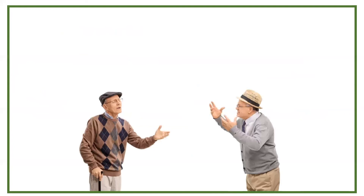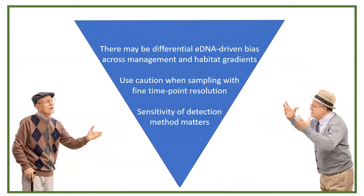To tie this all together: we can say conclusively that gradients of management, habitat, moisture, and temperature will result in differential eDNA-driven bias in our results — so these gradients matter. We also need to use caution when sampling with fine time-point resolution because of the delay between when eDNA enters the system and when it drops below the detection threshold. And the sensitivity of our detection method is going to matter. It's not a simple 'we're all doomed' or 'we're all fine' — there is subtlety here.